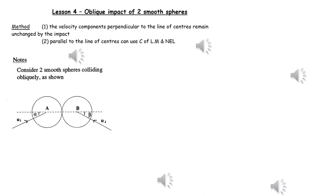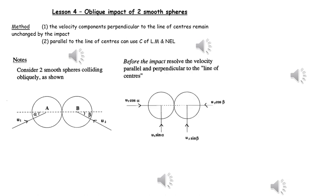In the exam, it is quite common to have a problem with the oblique impact of two smooth spheres. The standard method involves resolving the velocities before impact parallel to the line of centres and perpendicular to the line of centres, as shown.